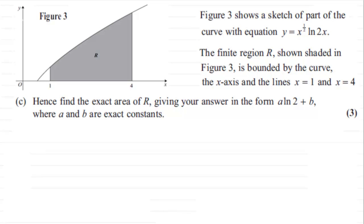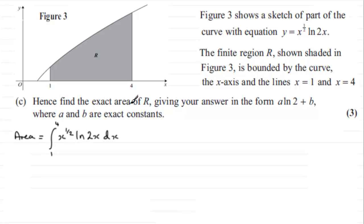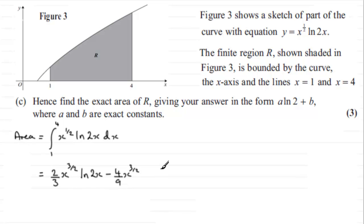Welcome back. To find this exact area requires that we work out the integral of x to the power half times the natural log of 2x, with respect to x, for values of x going from 1 to 4. In the previous part we worked out by integration by parts that this integral equals 2/3 · x^(3/2) · ln(2x) minus 4/9 · x^(3/2). Now we just need to put our limits in, going from 1 to 4.